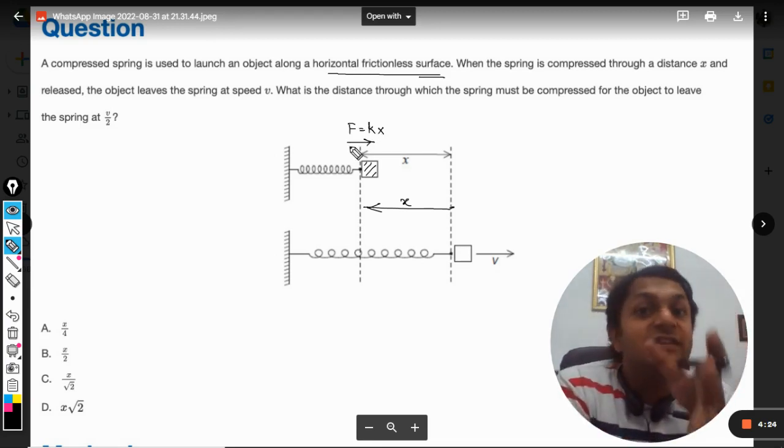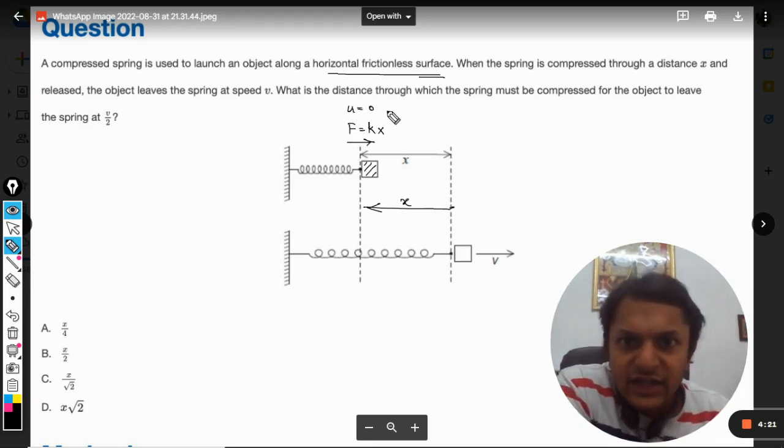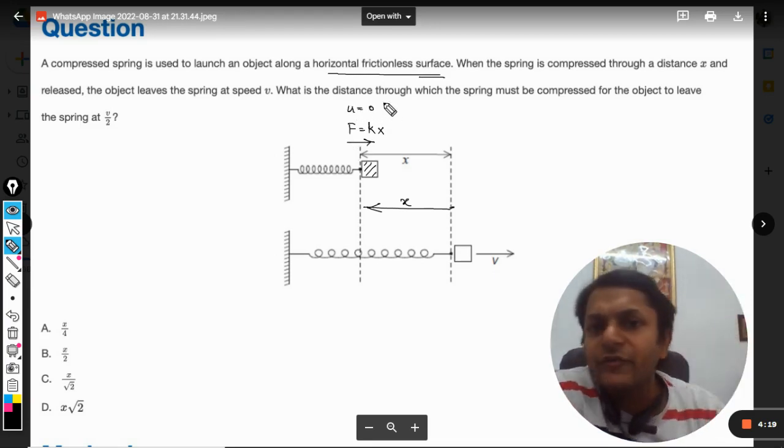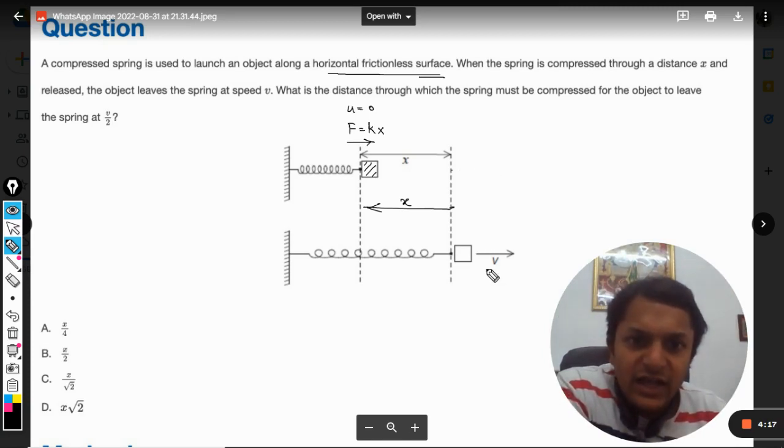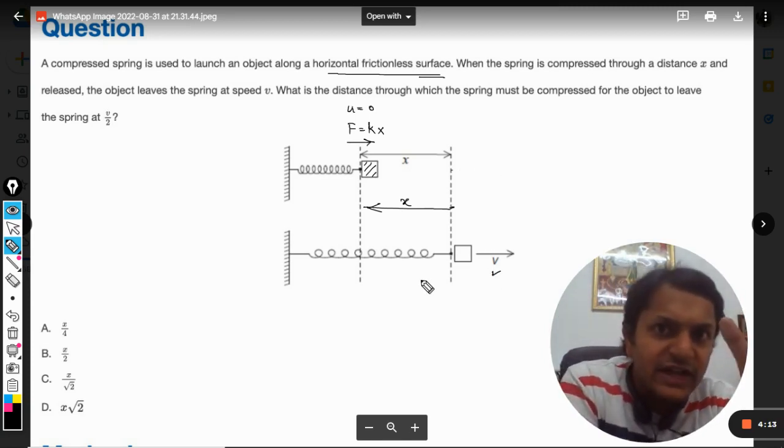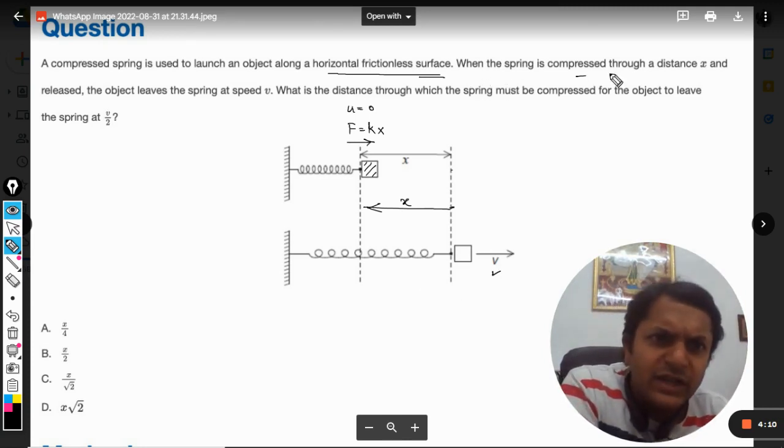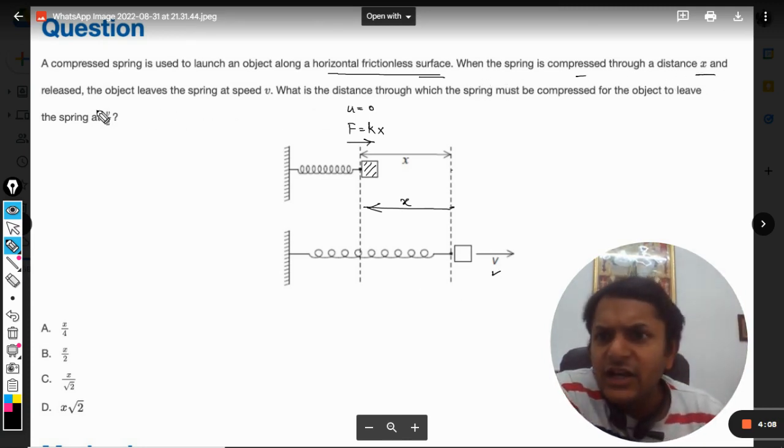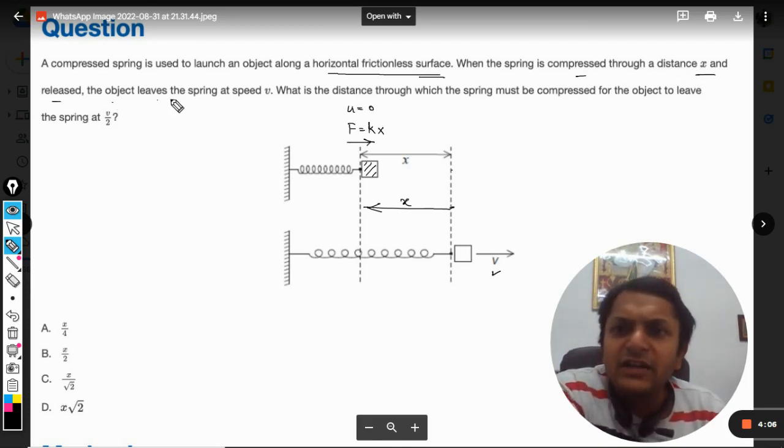Obviously, when there is a force and when the body is at rest, it will start accelerating due to the force and it will attain some certain final velocity because of that acceleration. Now, the question is: when the spring is compressed through distance x and released, the object leaves the spring at speed v.